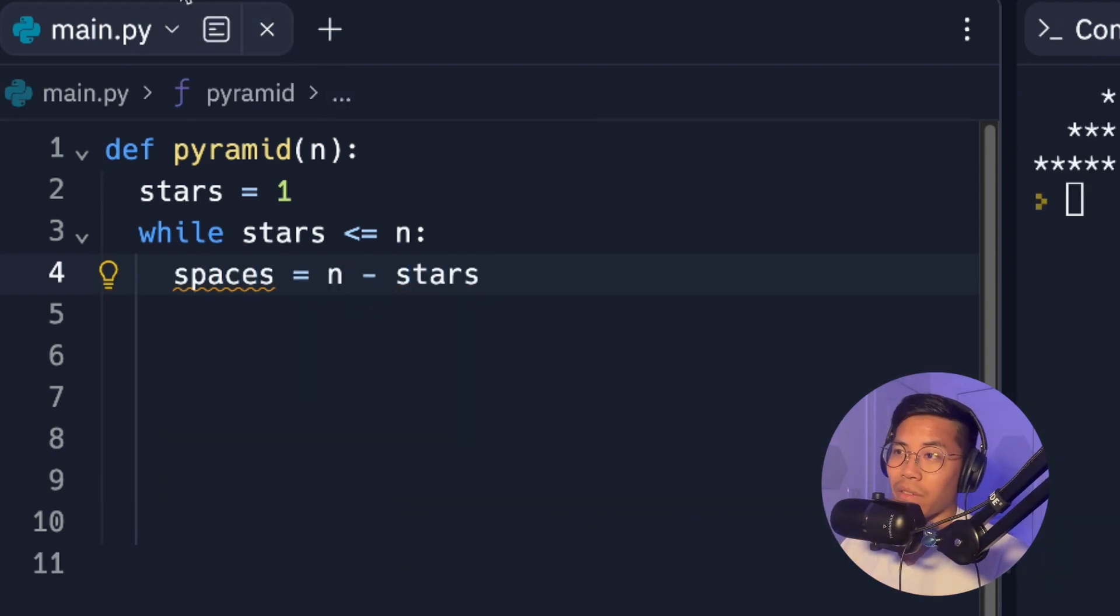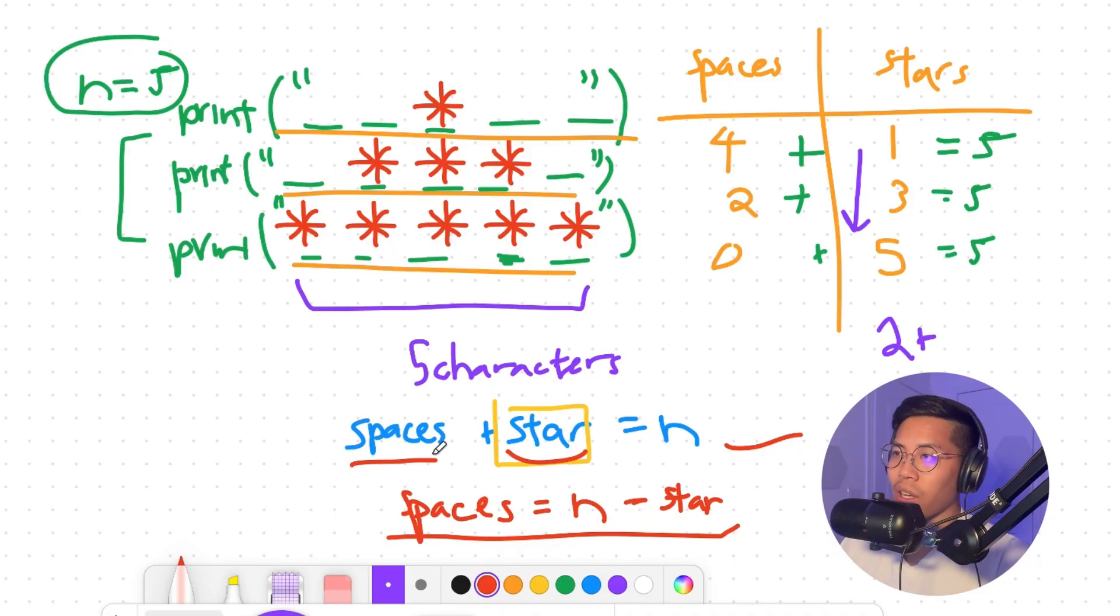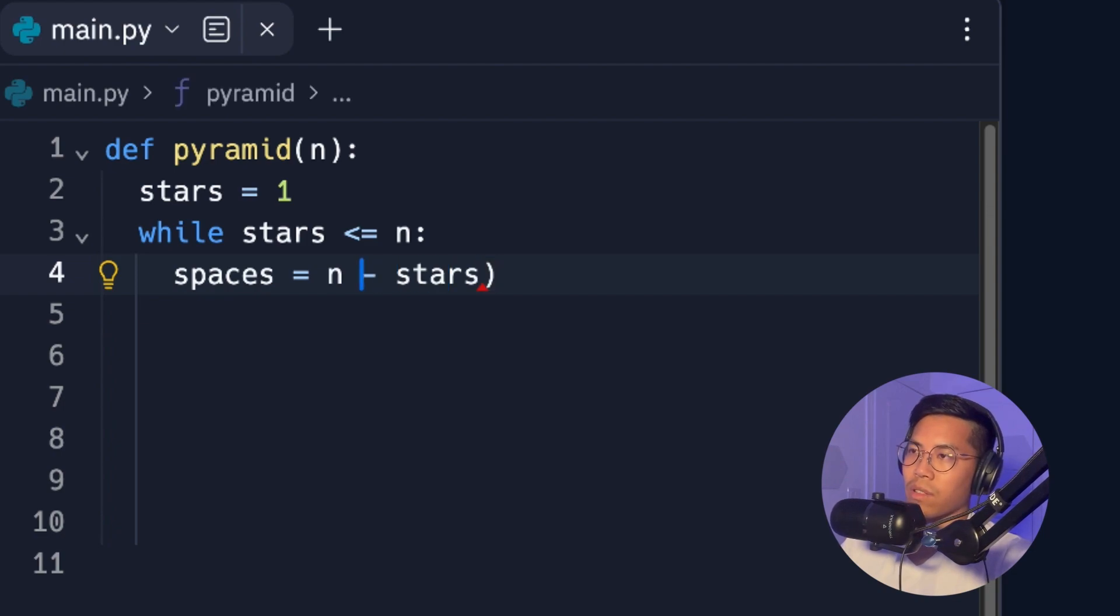So there's one thing that I forgot to mention. Go back to the drawing. So the spaces that we calculate is basically for both the left and the right side. So what we'll have to do is we need to divide this value by two. So we know how many spaces we need for each side. In this example here, we need two spaces on the left and two spaces on the right. Let's go back to the code. So now let's wrap this in parentheses. And now let's divide this by two.